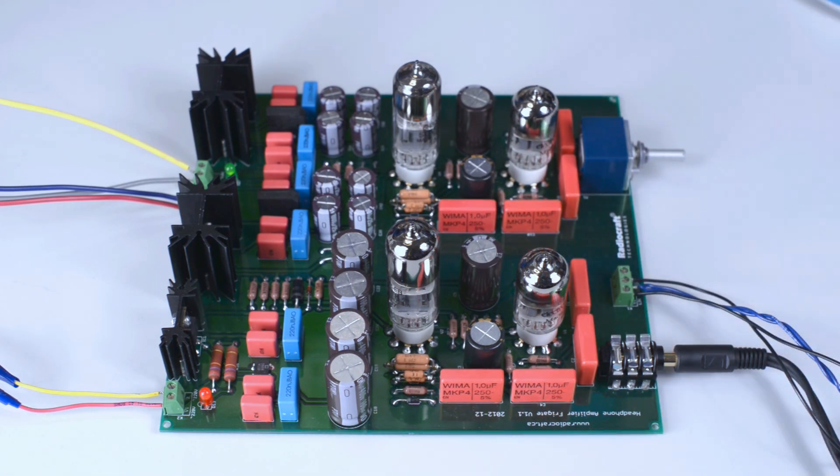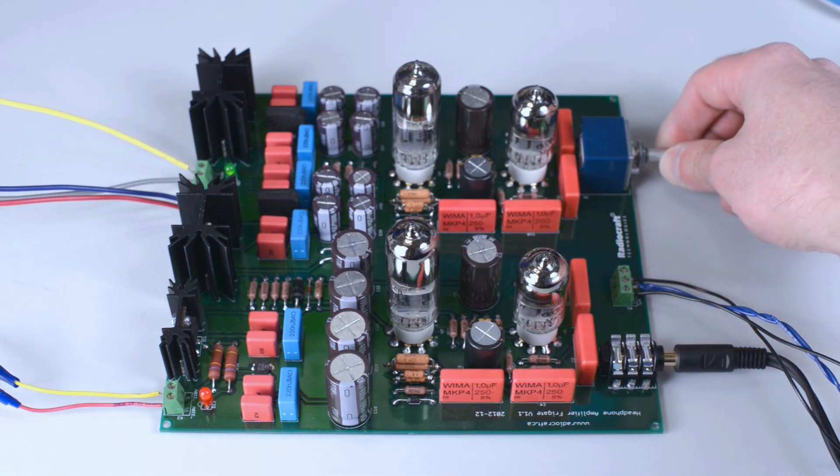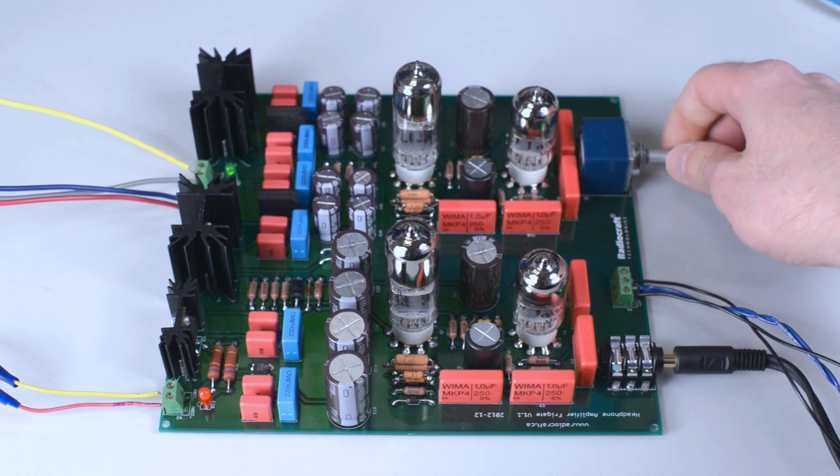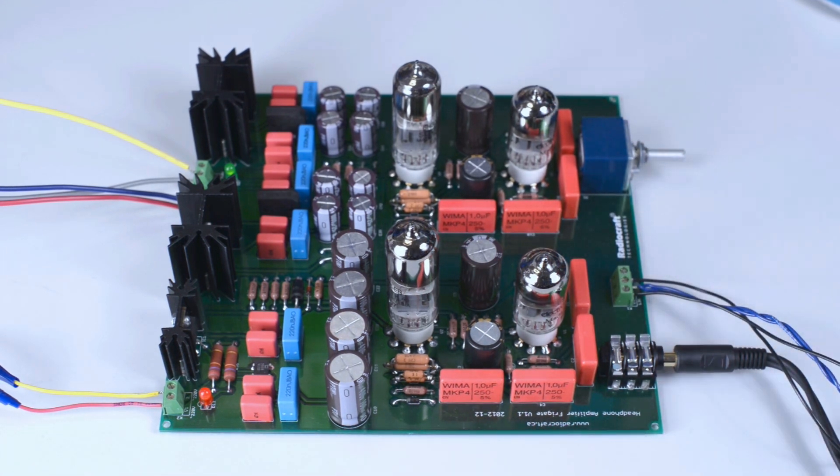This is the maximum volume produced by this headphone amplifier with Sennheiser 650. This is the minimum volume. Volume is zero. And volume is maximum again.